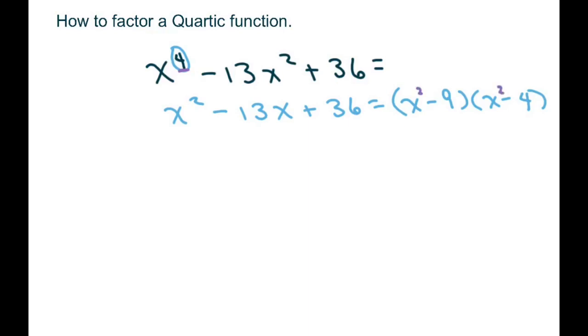So that's basically all you have to do because if you foiled it back, you multiply these two, you're going to get x to the fourth.